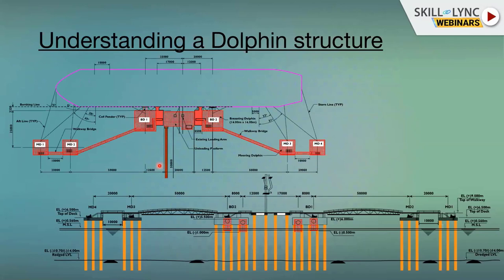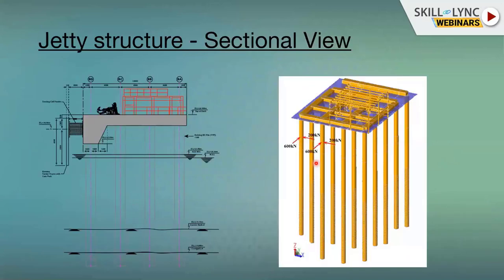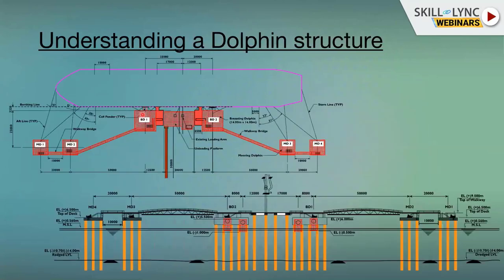Similar to the jetty structure is the dolphin structure — the concept is the same but the footprint is small, typically 14×14 or 20×30 meters. As shown in this 3D diagram, dolphins are used to either berth or moor a ship. Mooring means tying the ship; birthing means docking it. Some dolphins are mooring dolphins, others are birthing dolphins. Since only isolated structures are needed, we don't construct the complete stretch of a jetty — we use isolated mooring and birthing dolphins instead.